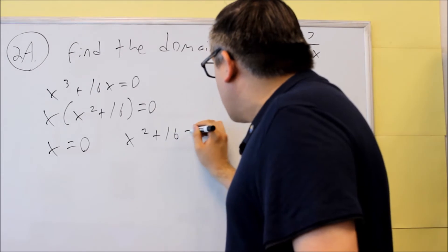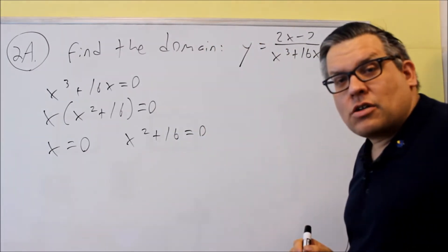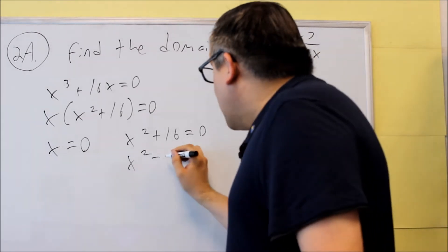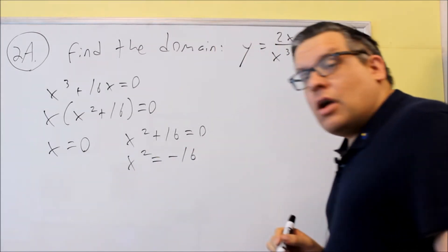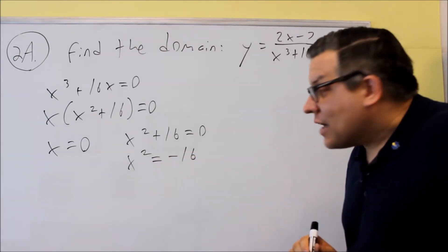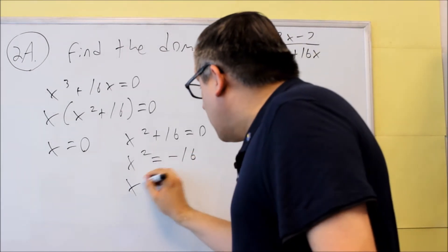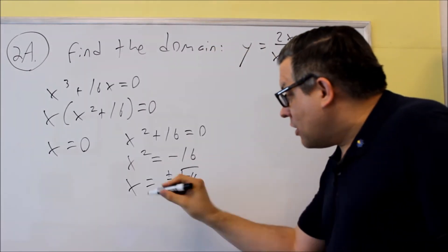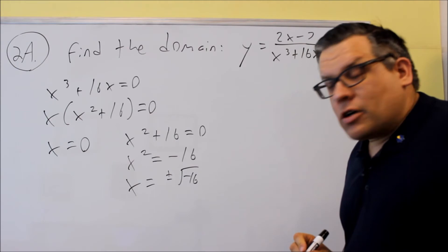Now the other one, I'm going to take x squared plus 16 and set that equal to zero. So if I try and solve for this one, I get x squared is equal to negative 16. And then I'm going to attempt to take the square root of both sides of that. I get plus or minus the square root of negative 16. But the problem with that is I get an imaginary number for that part.